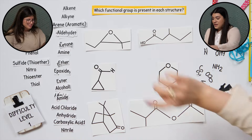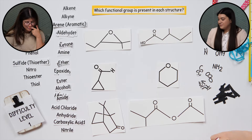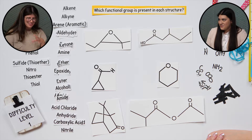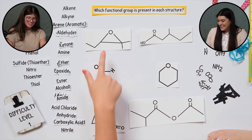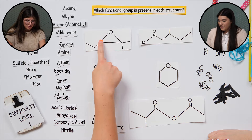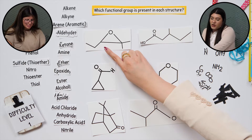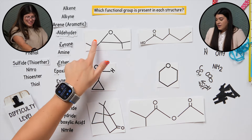This first question is matching — which functional group is present for each one of these structures? We only have one functional group for each structure. So what do you think this first one is? I'm trying to remember my notes. I had screenshotted the little chart I had. On this one I'm actually not sure, because this is an R group right here. You're right — they're both R groups. Remember, R groups are just a carbon chain, the rest of the chain. I actually don't know. Okay, let's skip it.